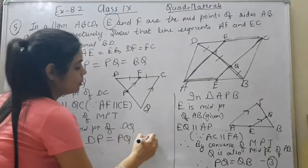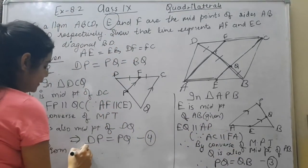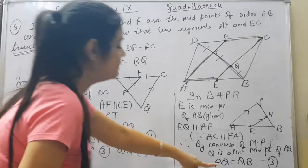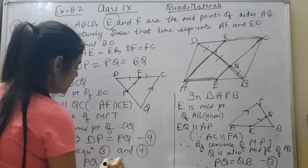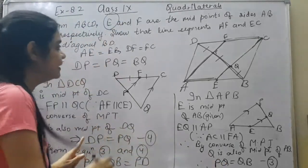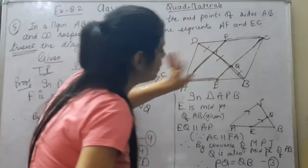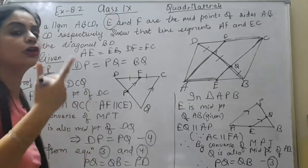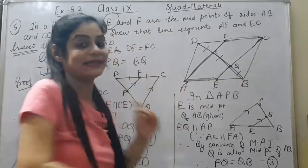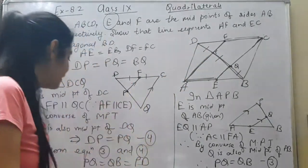From equations 3 and 4: PQ = QB and DP = PQ. Therefore DP = PQ = BQ. Since PQ appears in both equations and all three are equal, the diagonal BD is divided into three equal parts. This means AF and CE are trisecting BD, which is exactly what we had to prove.